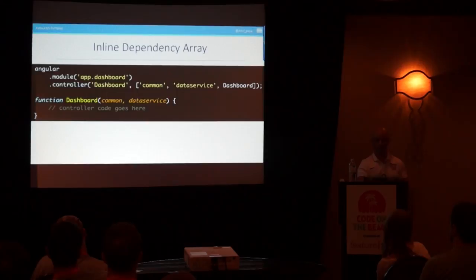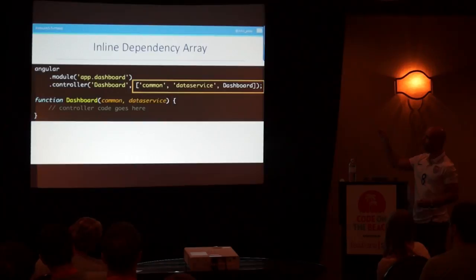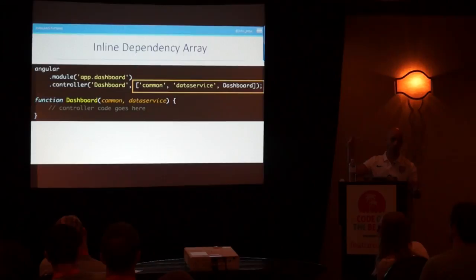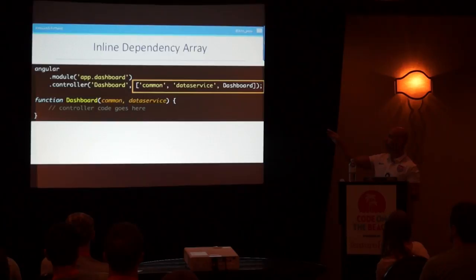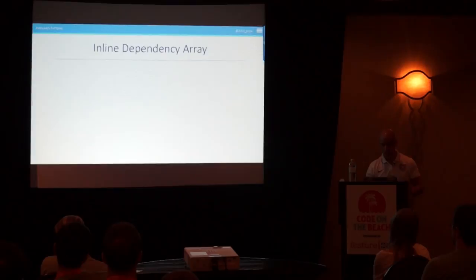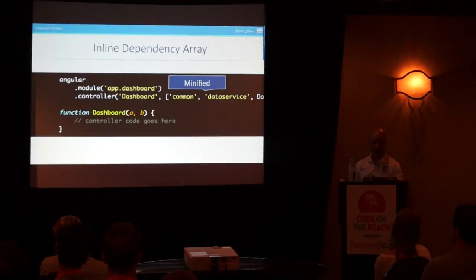One way is the array syntax: you tell Angular a hint, mapping the parameters for this controller to their string names. The strings must exactly match the service names. Angular finds them using the strings, even if the variable names get minified to A and B. The technique I prefer is $inject: you write dashboard.$inject = ['common', 'dataService'] as a separate line. One thing I like about this is the parameters and their string names are right on top of each other, so if you change a parameter you can see exactly what needs to be updated.